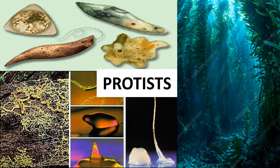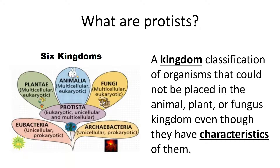Today we're going to take a look at protists. What are protists? When we're looking at the kingdom division of all life, we had bacteria - prokaryotes - and all the eukaryotes are broken down into plants, animals, fungi, and protists. It's a kingdom classification of organisms that could not be placed in the animal, plant, or fungus kingdom, even though they have characteristics of them. It's kind of like a leftover category.